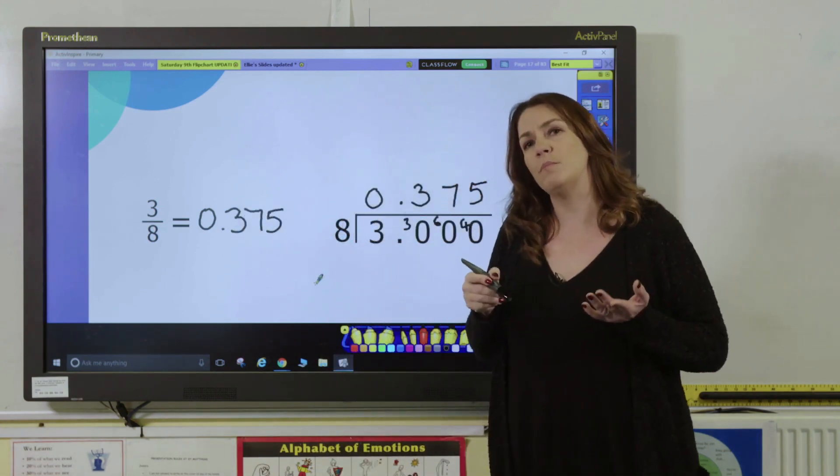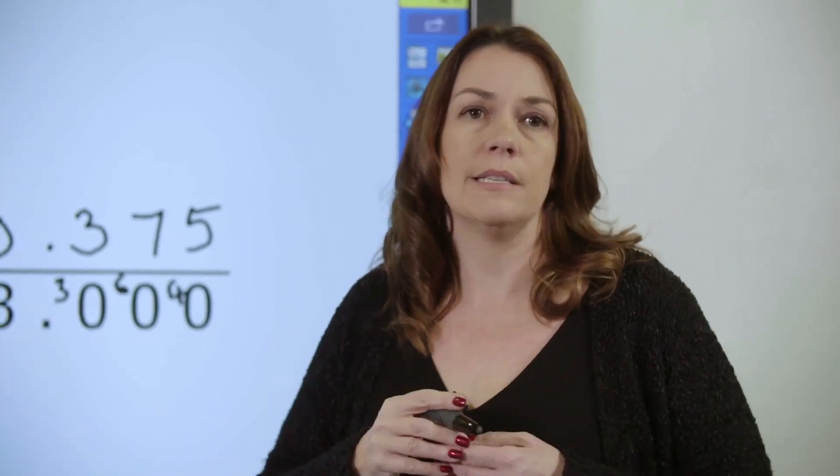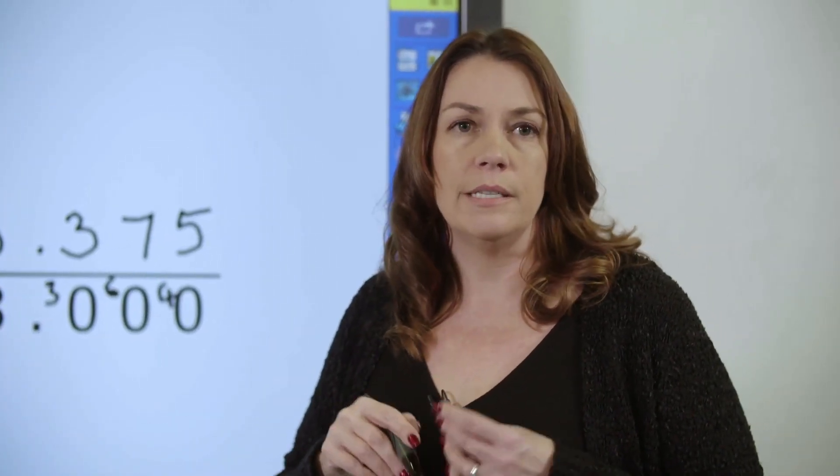Sometimes your pupils might get an answer where it's a recurring decimal, and at that point it's a really good idea to teach them about rounding to two or three decimal places. So there you go—that's how to convert a fraction to a decimal using division.